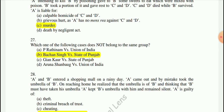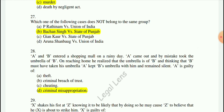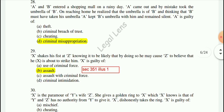Question 28: A and B enter a shopping mall on a rainy day. A came out and by mistake took B's umbrella. After reaching home, A realized the umbrella was B's, and thinking B had taken his umbrella too, A remained silent. The offense committed by A is criminal misappropriation.